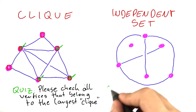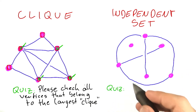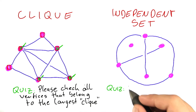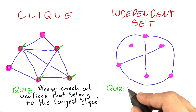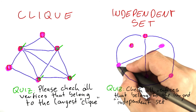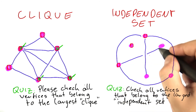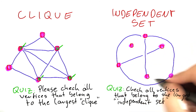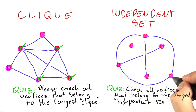And now we're going to do a similar quiz. This time I would like you to check all vertices that belong not to the largest clique, but to the largest independent set. So you can make your check marks on each of the vertices that you think belong to the largest independent set.